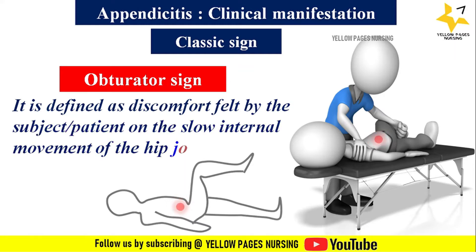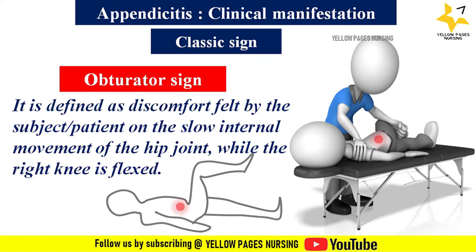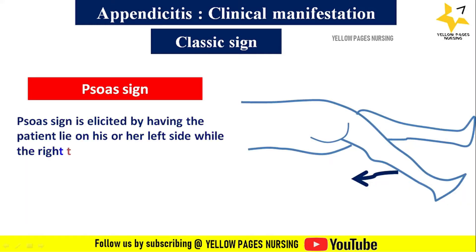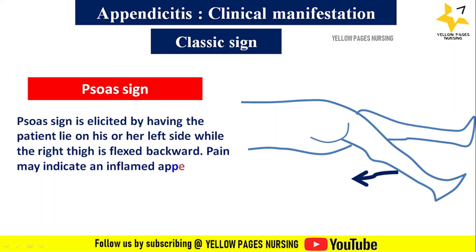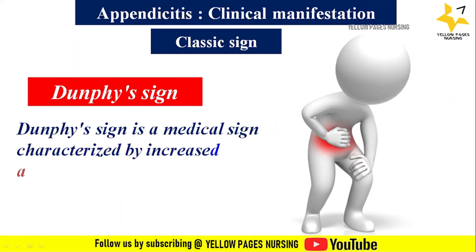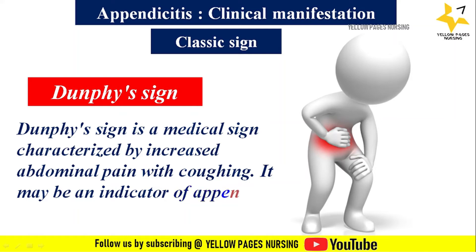The psoas sign is elicited by having the patient lie on their left side while the right thigh is flexed backward; pain may indicate an inflamed appendix overlying the psoas muscle. Dunphy's sign is characterized by increased abdominal pain with coughing and may be an indicator of appendicitis. All of these classical signs can be seen during physical examination.